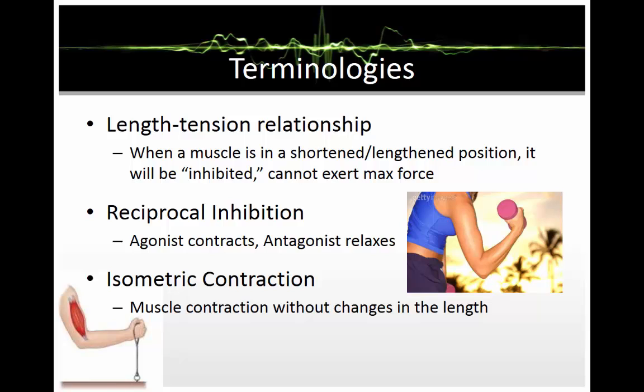Second is reciprocal inhibition. Reciprocal inhibition describes the process of muscles on one side of a joint relaxing to accommodate contraction on the other side of that joint. Joints are controlled by two opposing sets of muscles, extensors and flexors, which must work in synchronicity for smooth movement to occur.